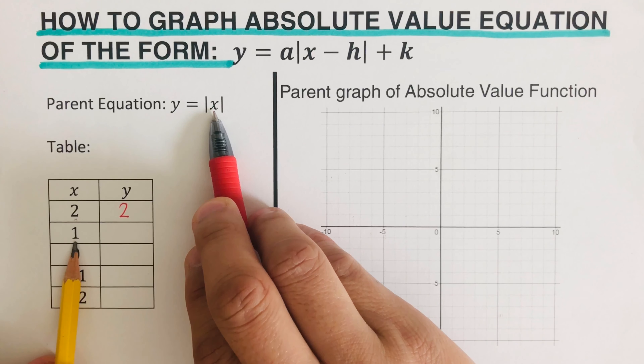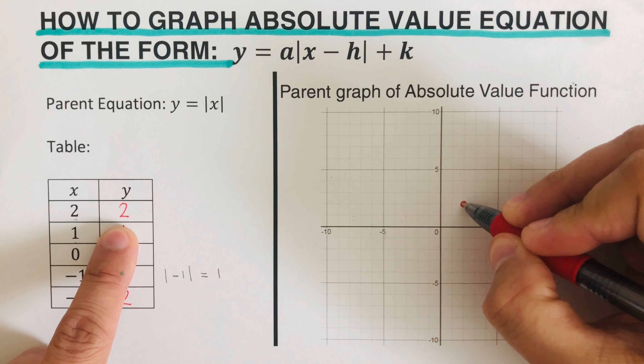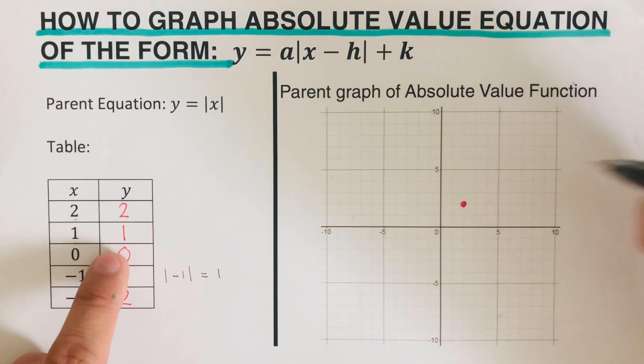This is the parent equation of an absolute value function. Let's fill this table in, because we're going to use this table when we are given an equation of this form. The absolute value of 2 is 2, the absolute value of 1 is 1, the absolute value of 0 is 0. The absolute value of negative 1 — notice: if we get an absolute value of a negative, we take the positive, so this would be positive 1. And the absolute value of negative 2 is positive 2.